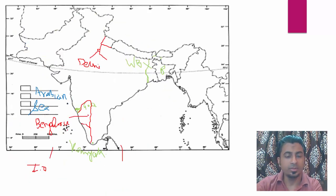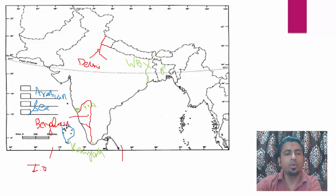Then Lakshadweep is also very easy. These dotted islands are Lakshadweep. This separate island is Minikoy Island — it is a very important island of Lakshadweep. These are all coral islands and together they are known as Lakshadweep.